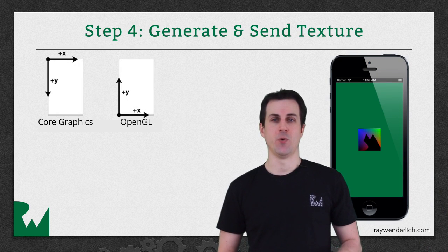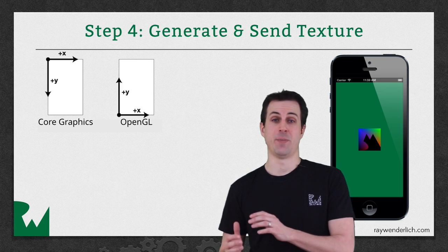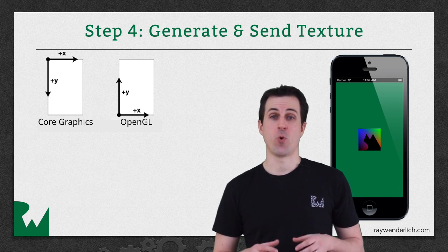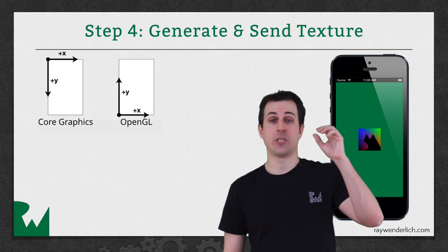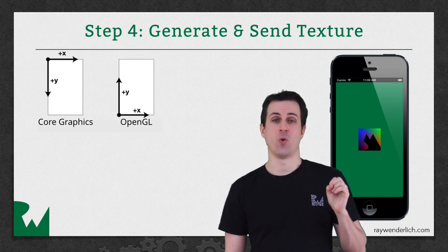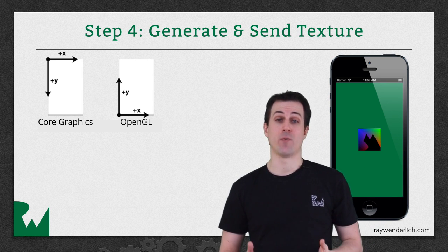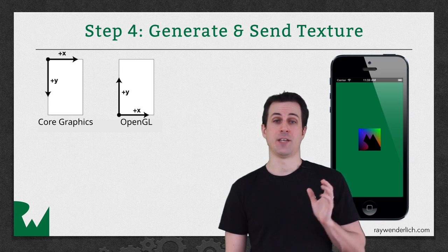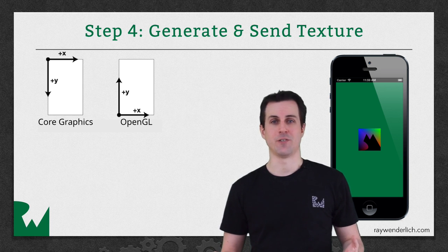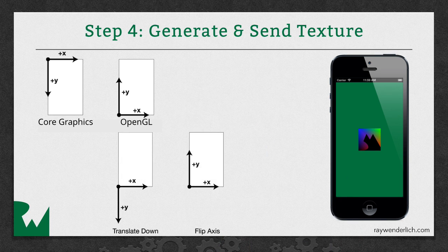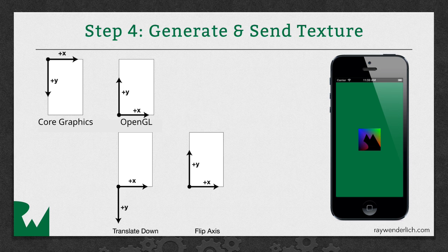But before we can send it to the GPU, we need to get the image data in a format that OpenGL expects. And the problem is, on iOS, core graphics uses a different coordinate system than the one that OpenGL uses. In core graphics, 0, 0 is the upper left of an image, with the y-axis going down, and the x-axis going to the right. However, on OpenGL, 0, 0 is the bottom left instead, with the y-axis going up, not down. So luckily, this is fairly easy to fix just using two core graphics functions. The first thing you need to do is translate the coordinate system down by the height of the image, and the second thing is you have to flip the axis around. If you do that, now your image will no longer appear upside down to what you'd expect, instead it will appear the right way up.